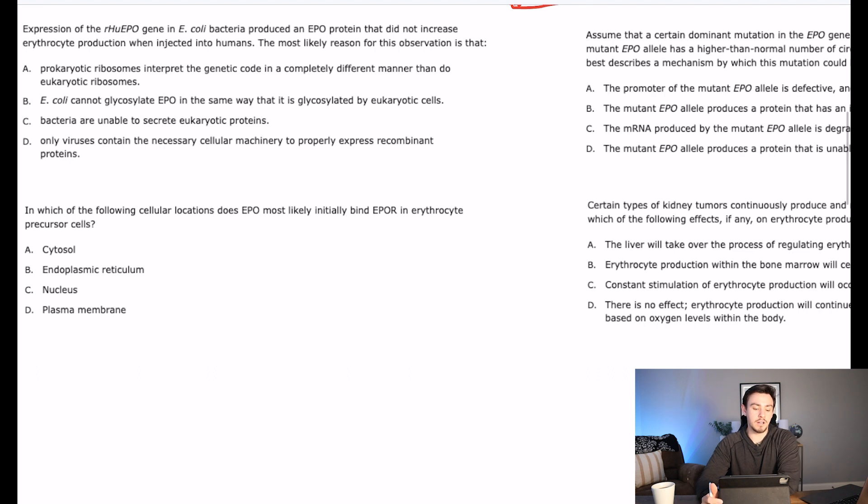This next one says expression of the recombinant human erythropoietin gene in E. coli bacteria produced a protein that did not increase erythrocyte production when injected into humans. The most likely reason for this observation is that what? Okay, so the MCAT does this a lot. They are dressing this up as a really fancy question. But the question is simply, which of these answer choices can a eukaryotic cell do that a prokaryotic cell cannot do?